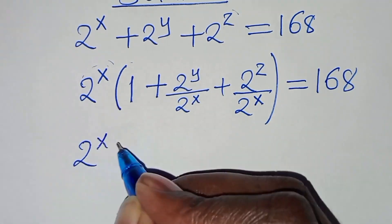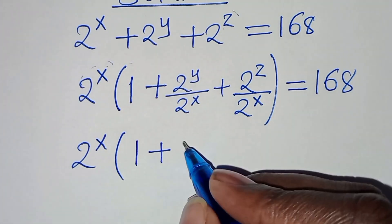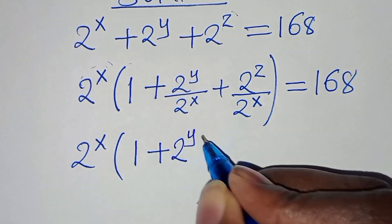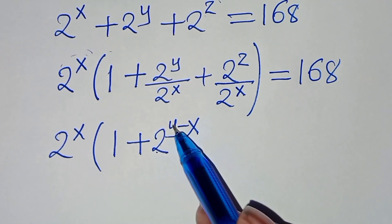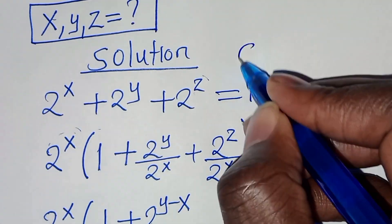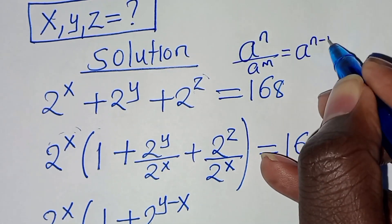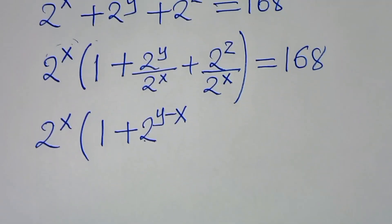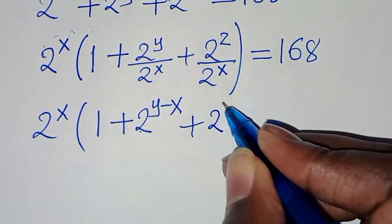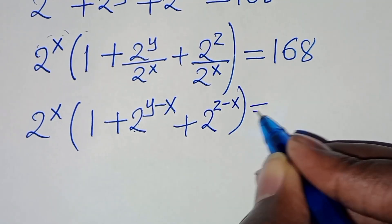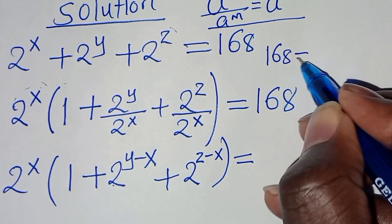So we have 2 to the power of x times the parentheses 1 plus 2 to the power of y minus x, plus 2 to the power of z minus x, all equal to 168. This uses the rule of indices: a to the power of n over a to the power of m equals a to the power of n minus m. We can express 168 as 8 times 21.